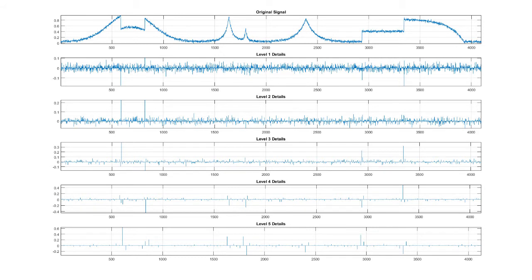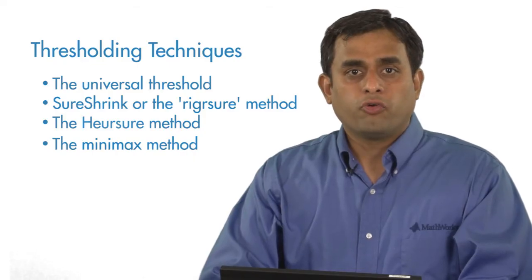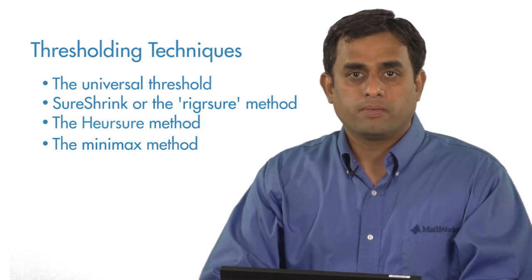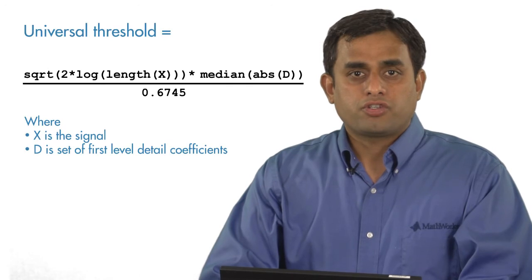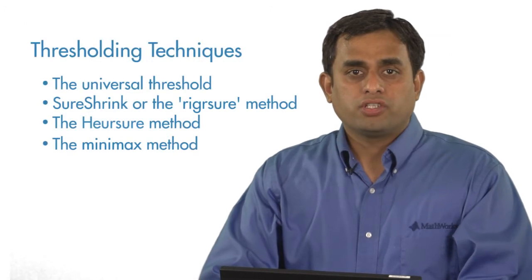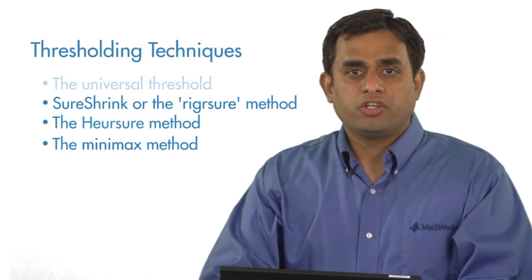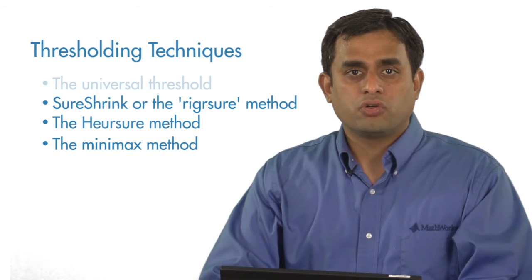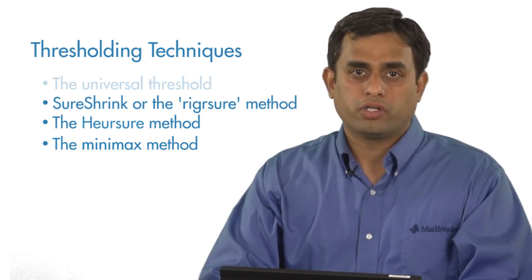One way to do this is by scaling the detail coefficients by a threshold. There are four main techniques available in MATLAB to help you compute a threshold. The universal threshold is the simplest to compute and is computed using this formula. Manually computing the threshold for the other three denoising techniques is not as straightforward. Instead, you can use MATLAB for this so that you can focus on using the threshold value without worrying about how it is computed.